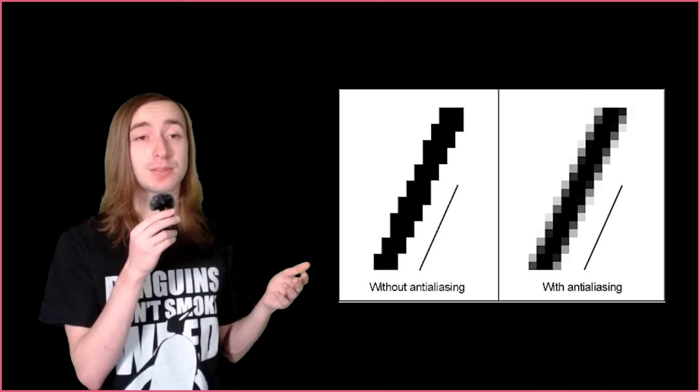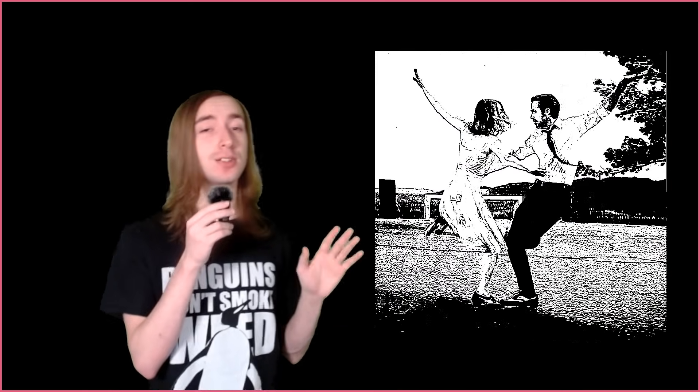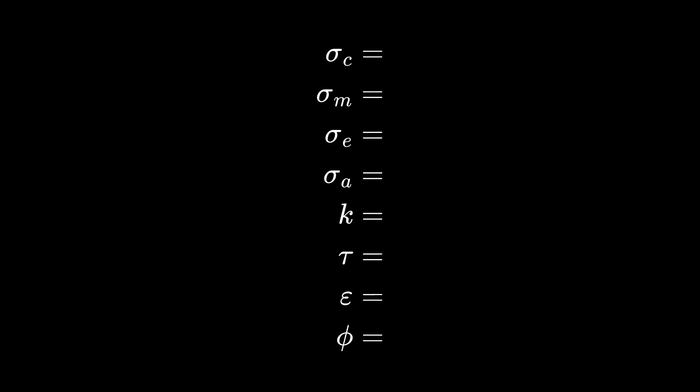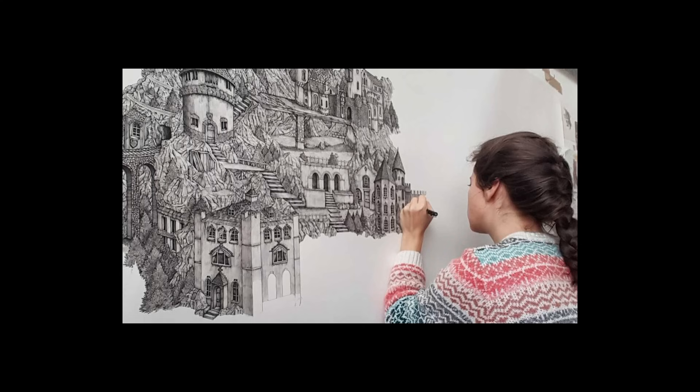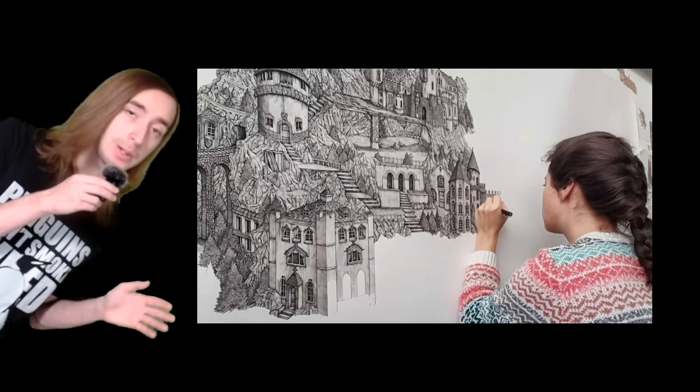If we take a look at our thresholded difference of Gaussians, we can see lots of aliasing all over the place, but it turns out we can very easily anti-alias this by doing a second line integral convolution to smooth out those jagged edges. The standard deviation of that blur will be referred to as sigma a, and it makes quite a big difference. This marks the completion of our difference of Gaussians algorithm. For the sake of simplicity, I'll be referring to the difference of Gaussians as the dog from here on.